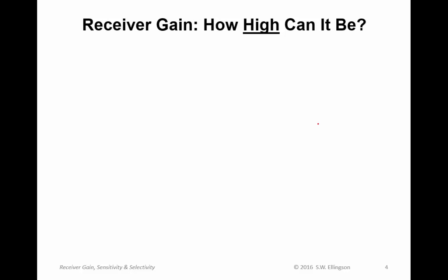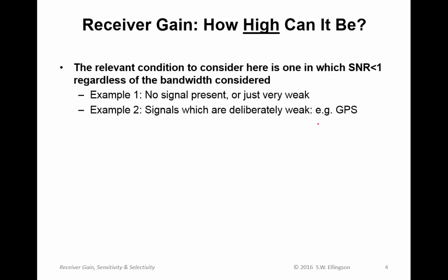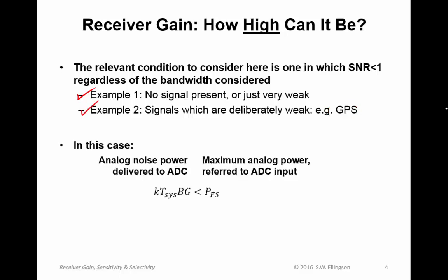Now, how about in the reverse direction? How high can the receiver gain be? The relevant condition to consider here is one in which the signal-to-noise ratio is less than 1, regardless of the bandwidth considered. For example, no signal present or signals which are deliberately very weak, such as GPS. In this case, we're looking for the analog noise power delivered to the digitizer to be less than the maximum analog power referred to the ADC input.